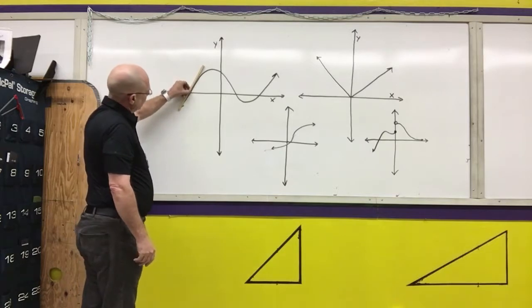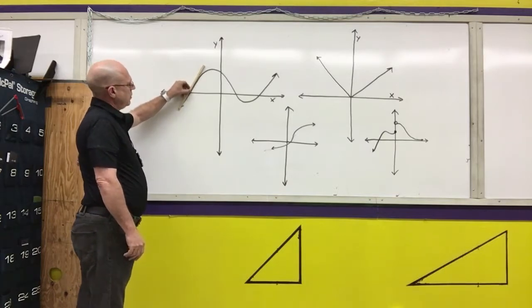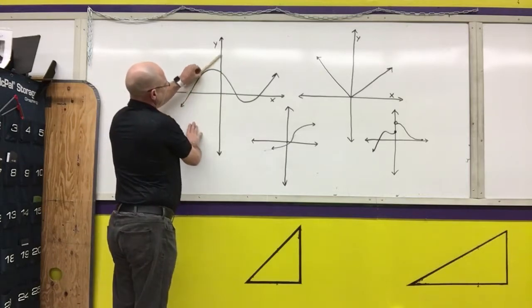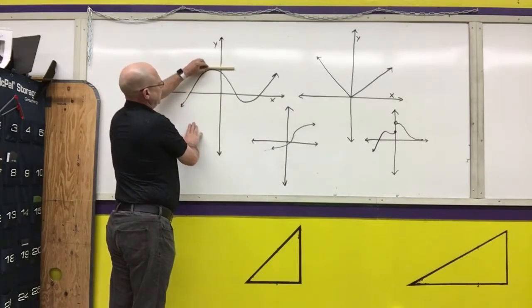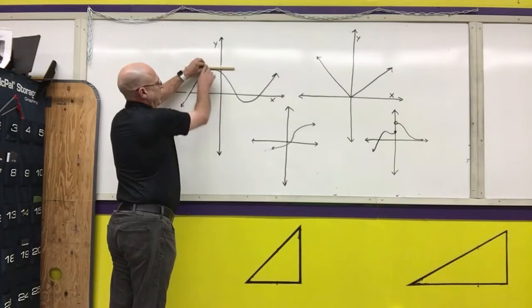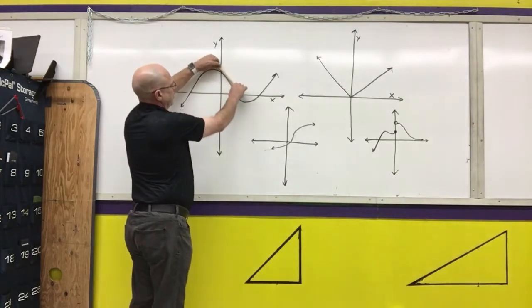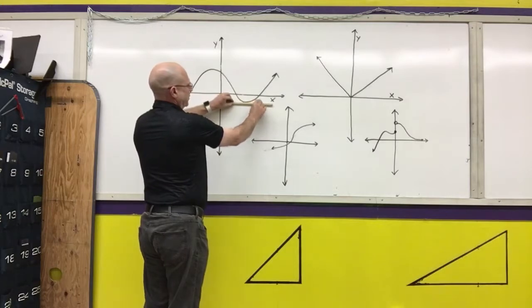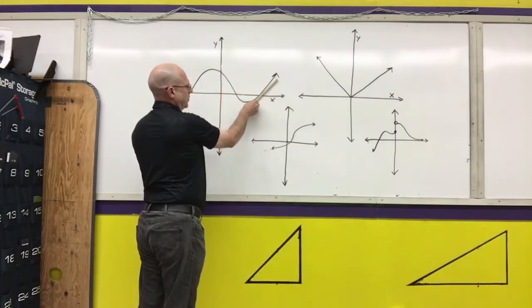So here the tangent line of this function is positive because the slope is uphill. Up here at its local maximum, the slope of that tangent line is zero. Here it is negative, here it is zero, and here it is positive.